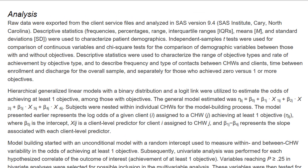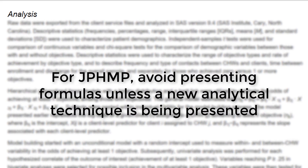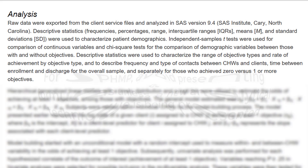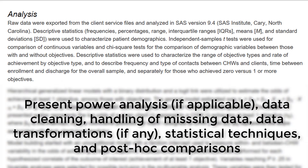When presenting statistical methods, it can be a challenge to balance between presenting enough information to ensure that your analyses could be reproduced and not presenting it in a manner that confuses the non-statistically oriented reader. Typically for JPHMP, we suggest avoiding the presentation of formulas unless a new analytical technique is being presented. However, it's important that the information necessary for the interpretation of the results is presented. Generally speaking, authors should present the power analysis, data cleaning, handling of missing data, data transformations, statistical techniques, and post-hoc comparisons.